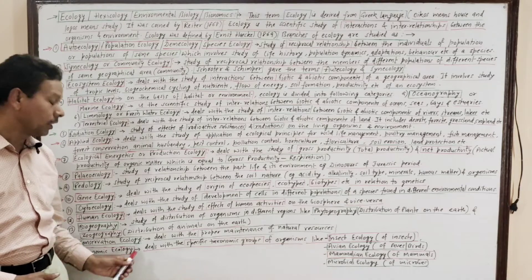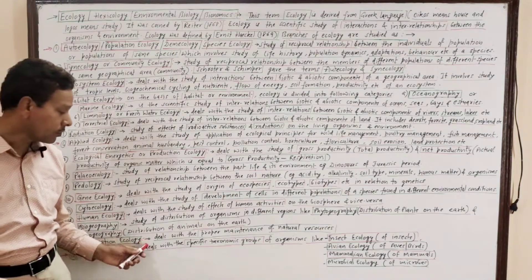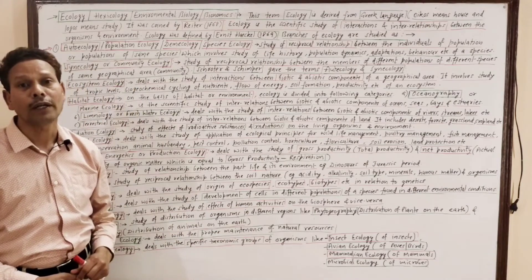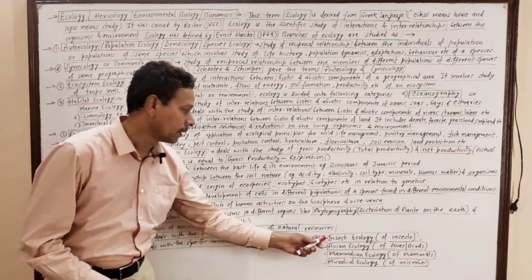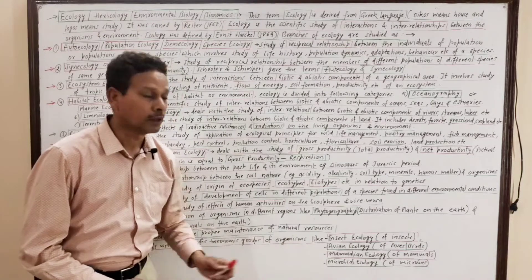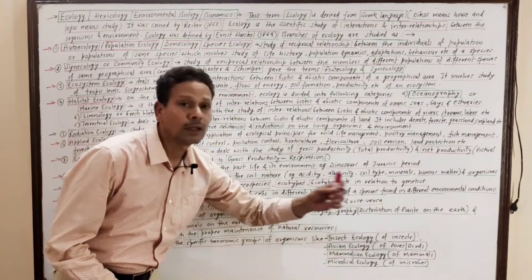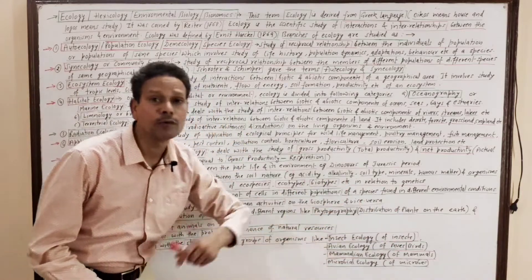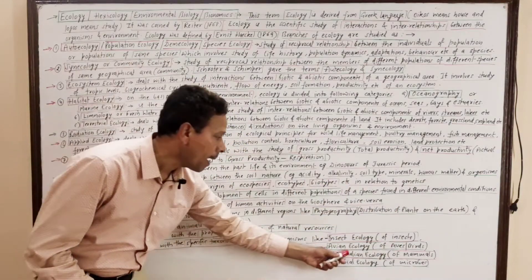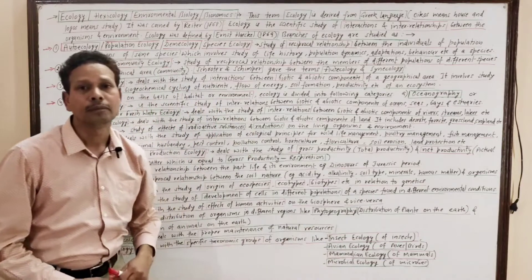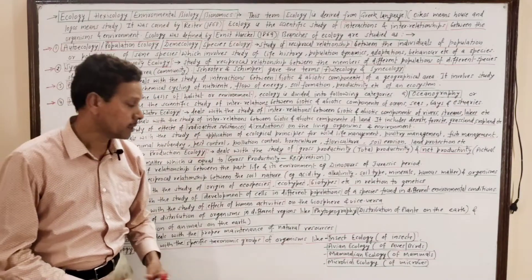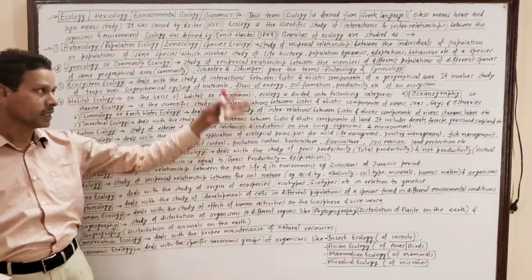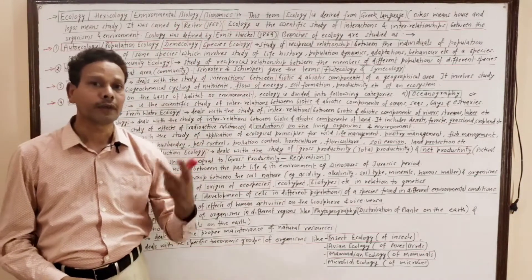Taxonomic ecology deals with the study of specific taxonomic groups of organisms. For example, insect ecology deals with the study of insects, avian ecology deals with the study of birds, mammalian ecology deals with the study of mammals, and microbial ecology deals with the study of microbes.